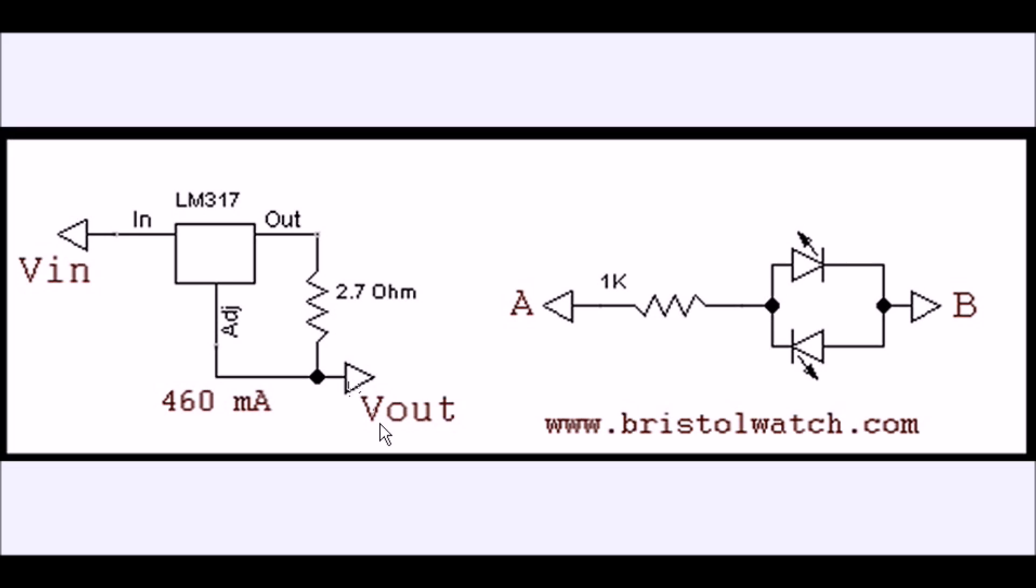I used a current limited LM317 with a 2.7 ohm resistor. This will give me a max current output of 460 milliamps. As you saw in the video, I actually had a 12 volt light bulb, since it's a 12 volt system in this case, wired from the in to the out.